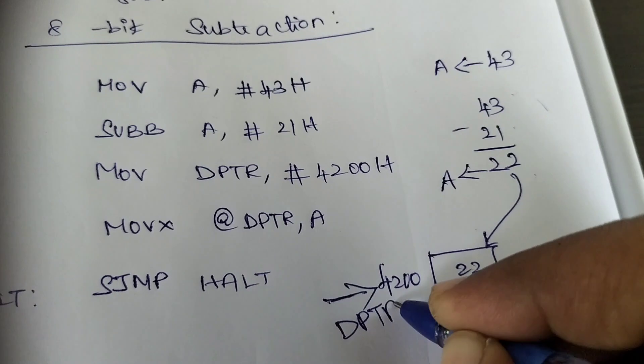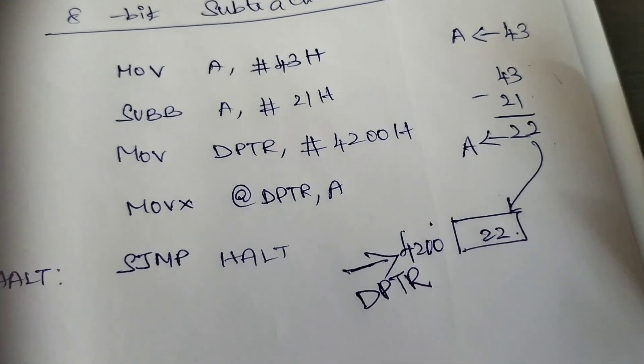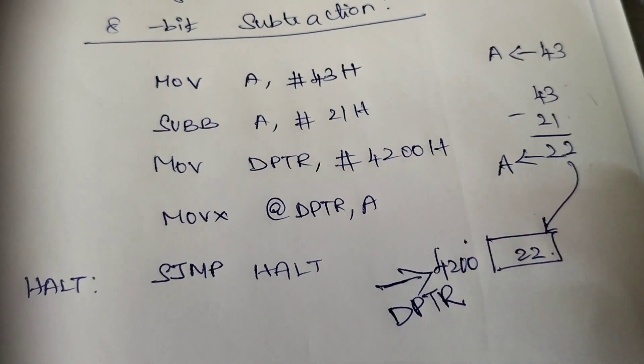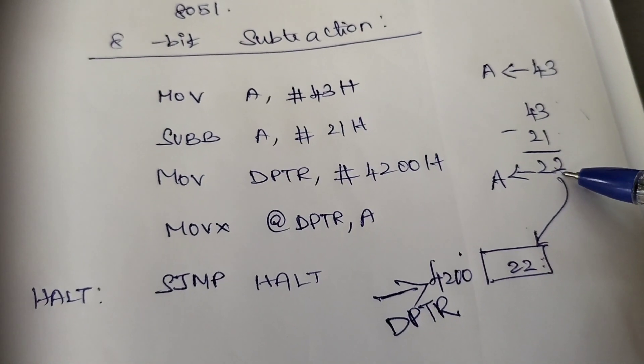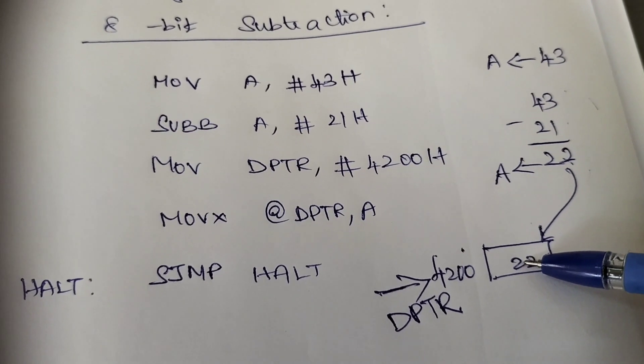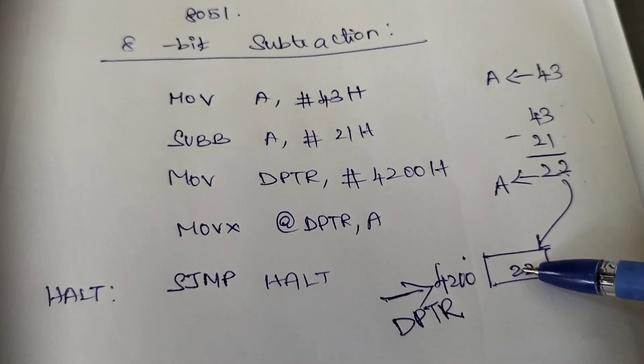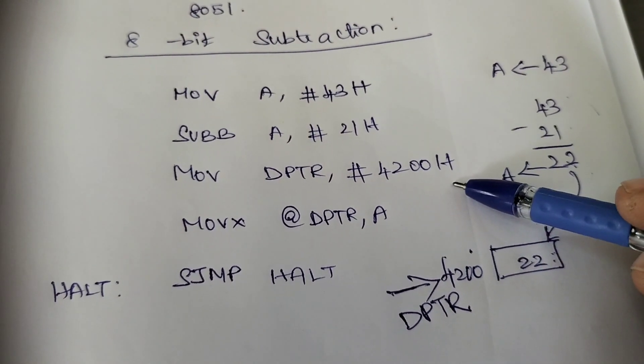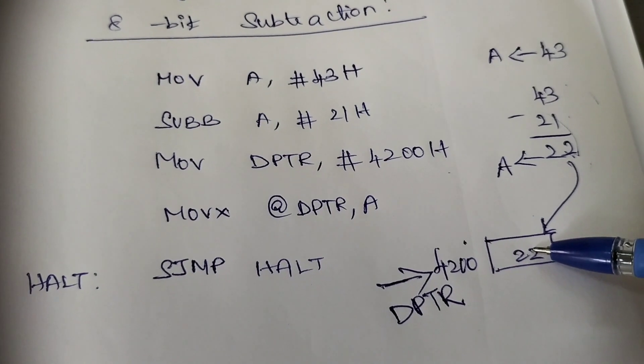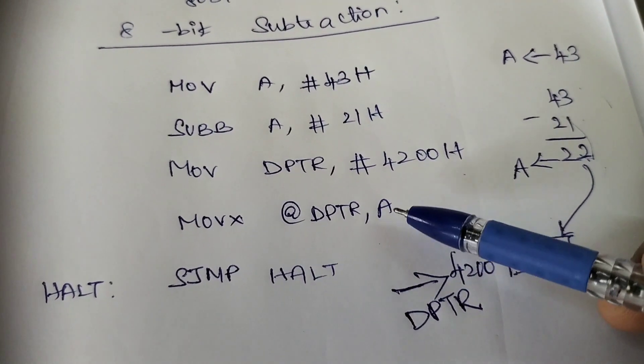MOV DPTR, #4200 - meaning the value 4200 is loaded to DPTR. Next instruction: MOV X @DPTR, A. Whatever value is available in the accumulator will be loaded into the memory location pointed by DPTR. DPTR is having 4200, so that location will load the value 22.